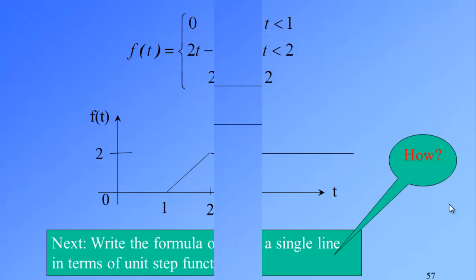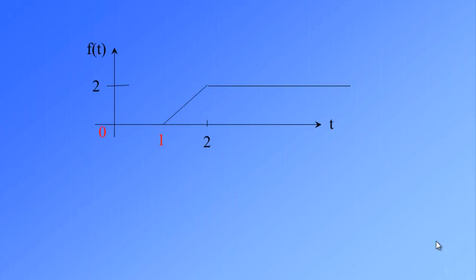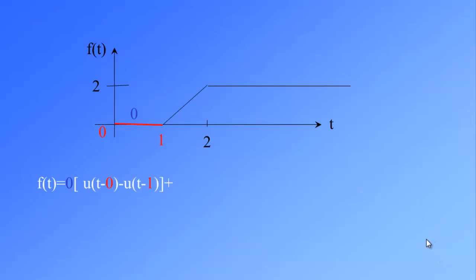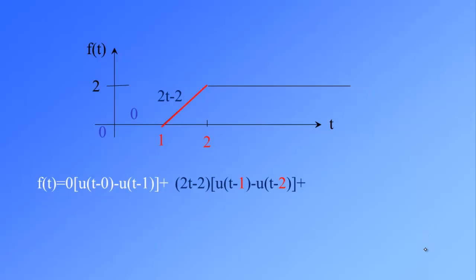How? We can make use of the rectangular pulse function introduced at the beginning. For time between 0 and 1, f(t) = 0, so we write 0 times [u(t−0) − u(t−1)]. Then, for t between 1 and 2, the equation is 2t − 2, so we write the second piece as (2t − 2)[u(t−1) − u(t−2)].